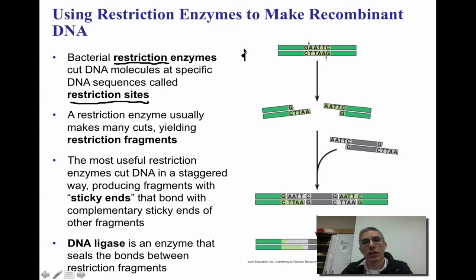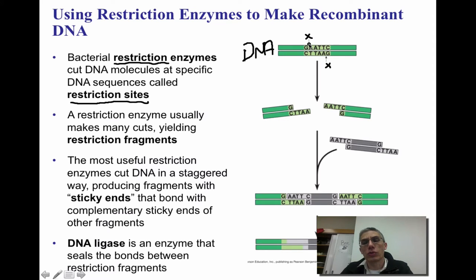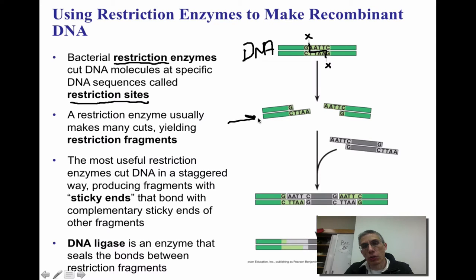Over here on the right is our DNA. You're going to see arrows indicating where the restriction enzyme is going to cut that DNA. A restriction enzyme will usually make many cuts, so we're going to have lots of different restriction fragments. Once that cut is made, you end up with something that looks like this. This is really important because we need a cut that's going to allow us to insert that gene of interest into the DNA of the plasmid. These are going to be considered sticky ends.